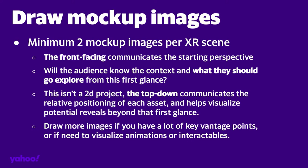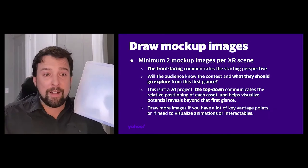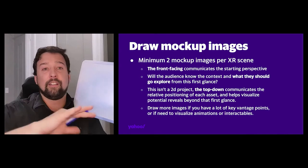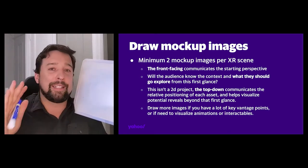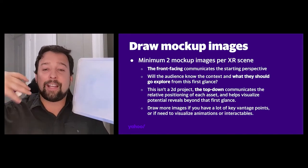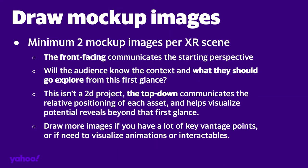After you've made your list, the next step is to draw your mock-up images. I'm not an artist, but you need a minimum of two images per XR scene. The front-facing image communicates the starting perspective of your audience — the view you want them to first look at your scene from. And you also want a top-down view. The top-down view communicates to a partner or collaborator the relative position of the various assets in relationship to each other. It also helps you understand what might be revealed as someone rotates, that's not initially visible in their first perspective.